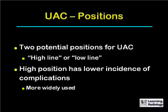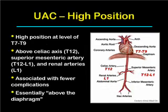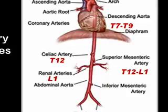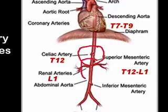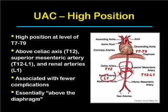There are two potential positions for umbilical arterial catheters: the high position, sometimes called the high line, and the low position, sometimes called the low line. The high position has a lower incidence of complications and is more widely used. The tip is at the level of T7 to T9, above the celiac axis at T12, above the superior mesenteric artery at T12 to L1, and the renal arteries at L1 — essentially above the diaphragm.